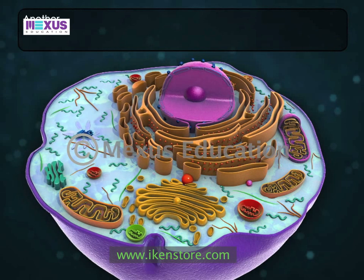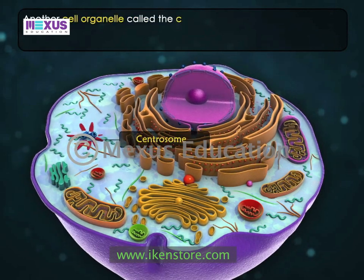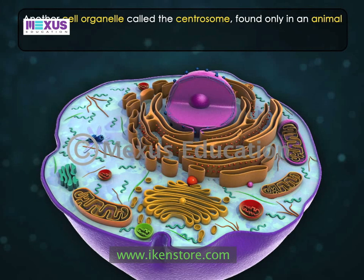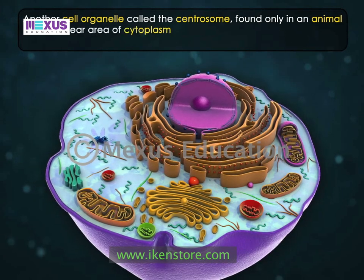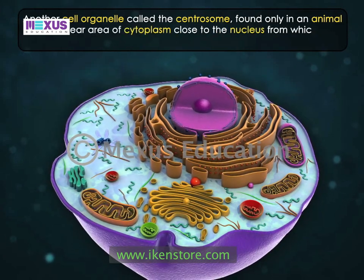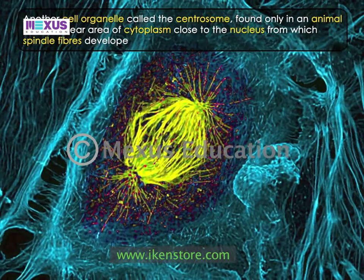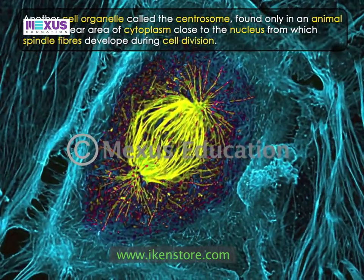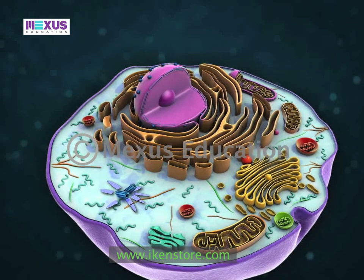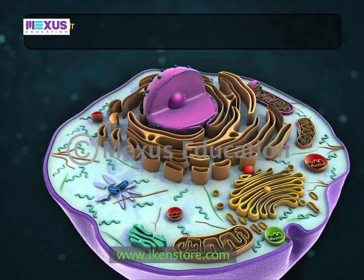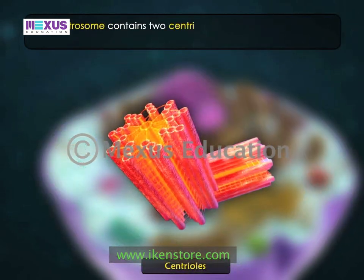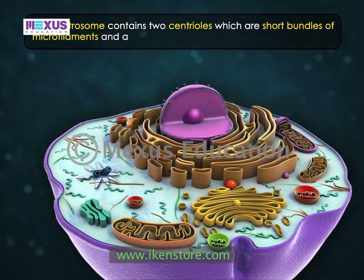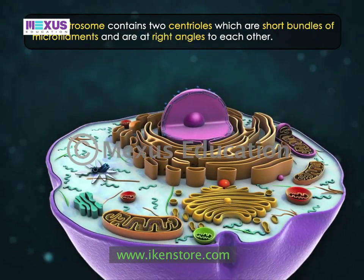Another cell organelle called the centrosome, found only in an animal cell, is a clear area of cytoplasm close to the nucleus, from which spindle fibers develop during cell division. The centrosome contains two centrioles, which are short bundles of microfilaments and are at right angles to each other.